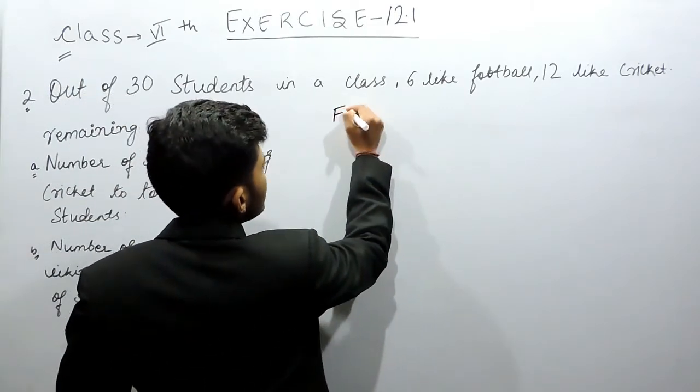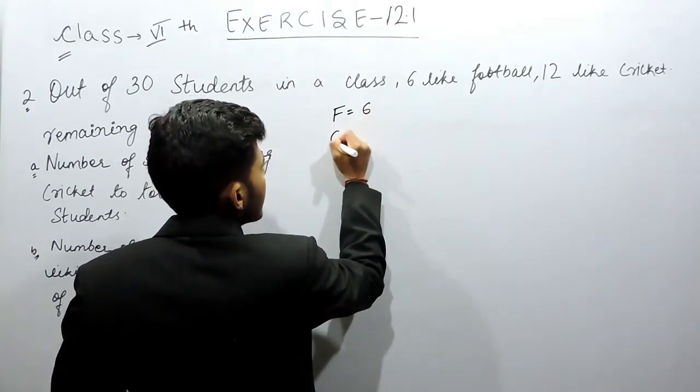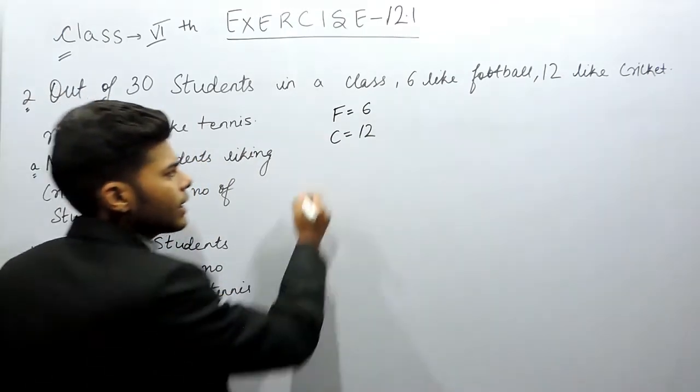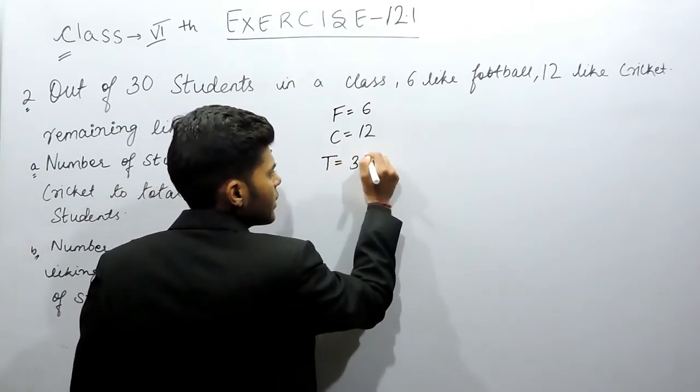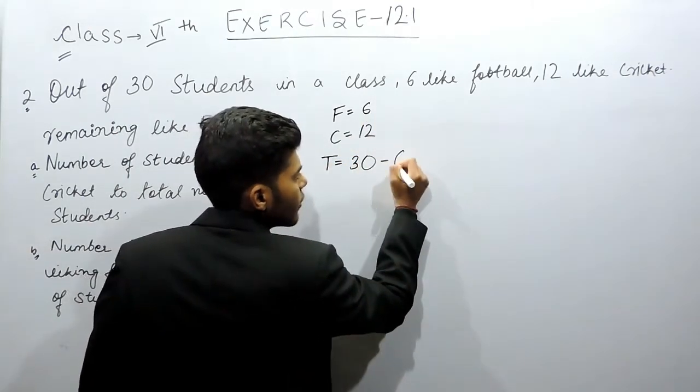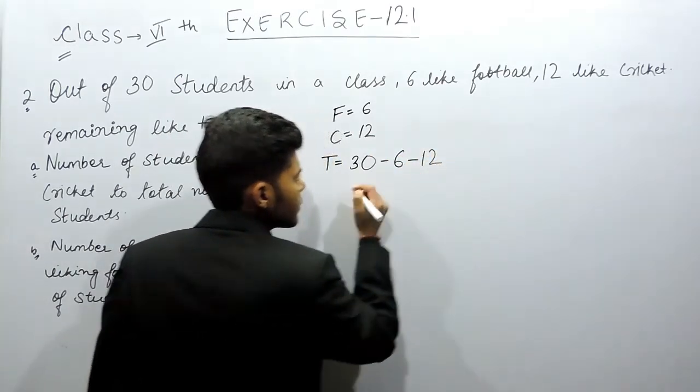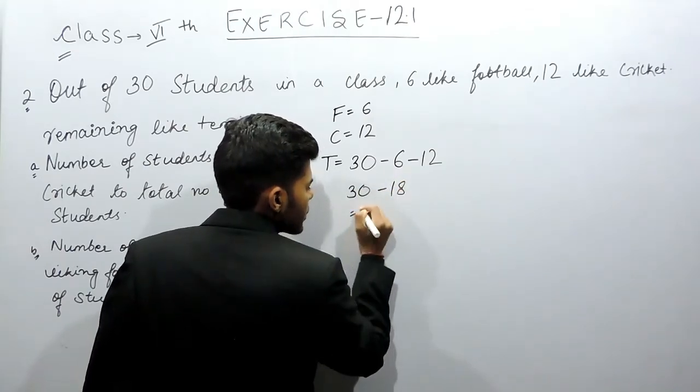So number of students who like football is 6, cricket is 12, and the remaining like tennis. That means the number of students liking tennis will be equal to 30 minus the number of students liking football minus the number of students that like cricket. So that will be 30 minus 18 and equals to 12.